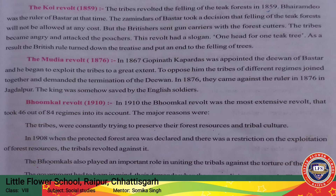The feeling was that the teak forest would not be allowed to be destroyed at any cost. Next, the Moodiya Revolt of 1876: in 1867, Gopi Naad Kapardas was appointed as the Diwan of Bastar and he exploited the tribes to a great extent.